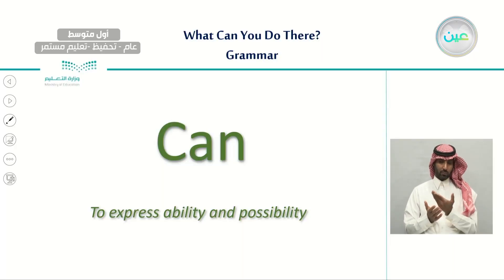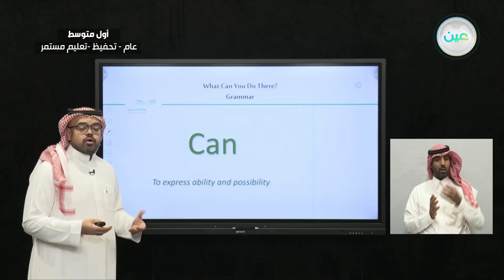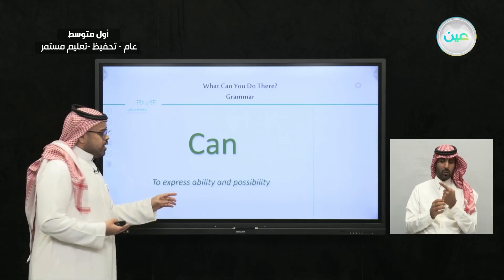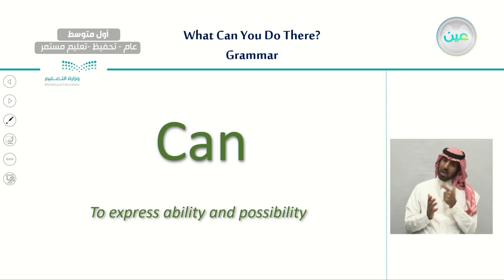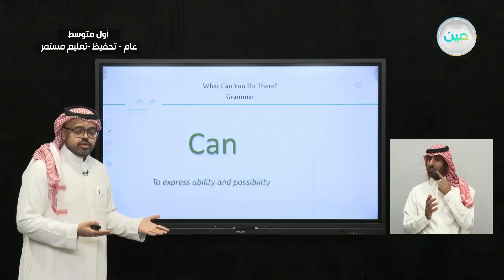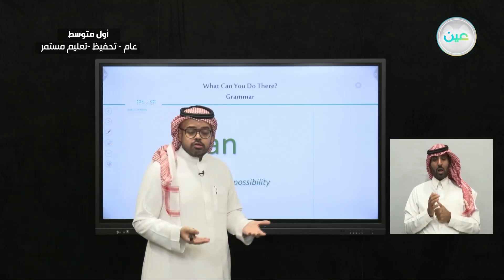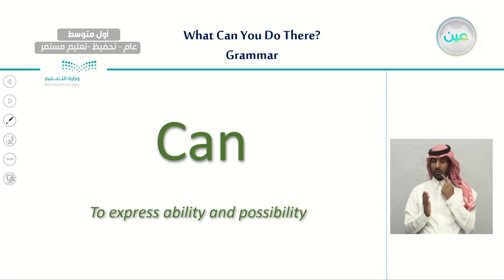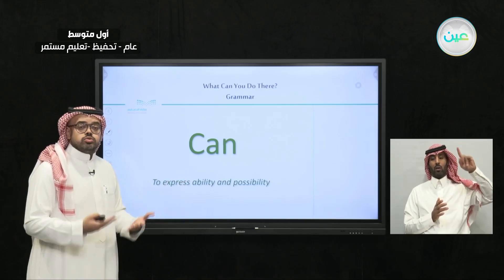Our lesson today is about the modal CAN — what exactly we use CAN for. We use CAN to express ability and possibility. If I want to say that I am able to do something, I use CAN. For example: I can walk, I can write, I can teach. This is about ability.